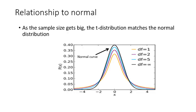This shows the relationship of the t-distribution to the normal distribution. The normal curve is in black. With df equal to 1 shown in orange, as you increase your df and it approaches infinity, it matches the normal distribution.